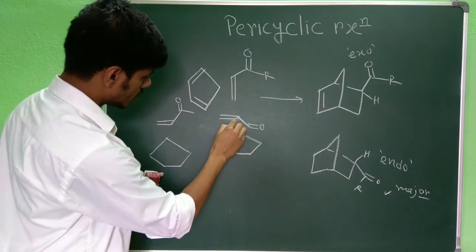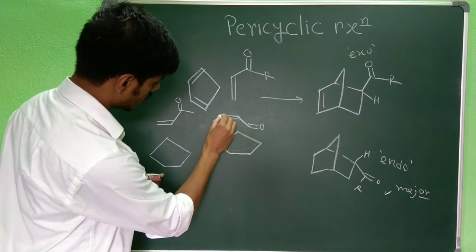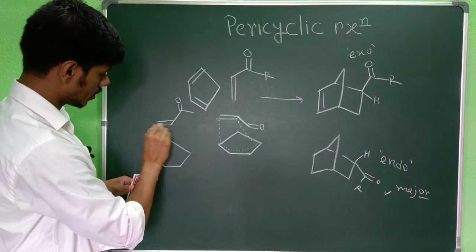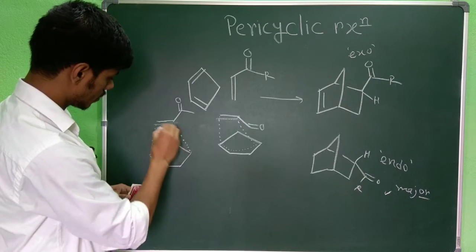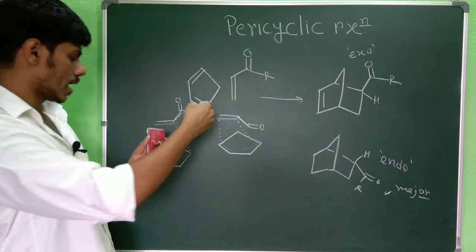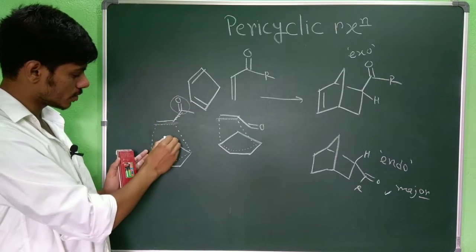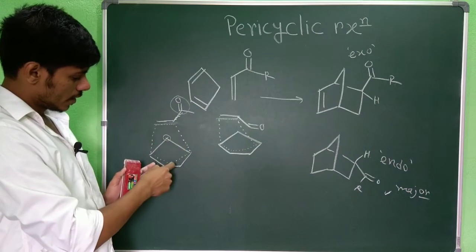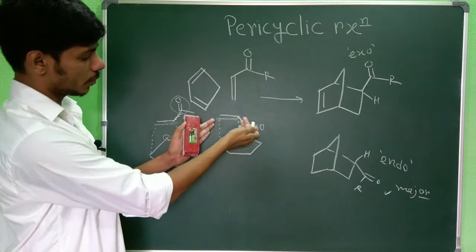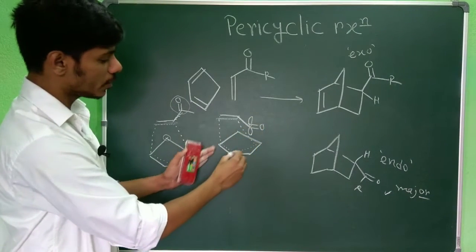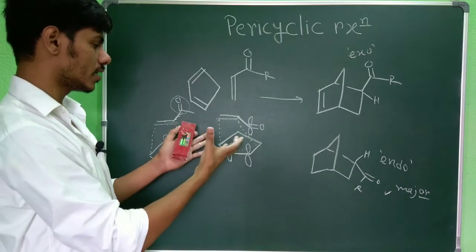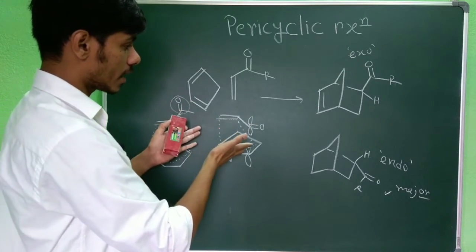In the transition state, you have this six-membered transition state in both cases. The difference between these two is: in one case, this carbonyl group is away from the developing pi bond and has no interaction with it. But when this carbonyl group is on this side, you can see this p orbital is perfectly positioned over this pi orbital, and it has a secondary interaction. This is called secondary interaction, and this secondary interaction stabilizes the transition state.